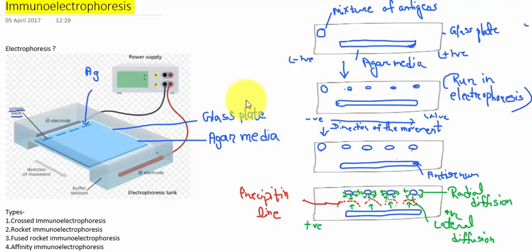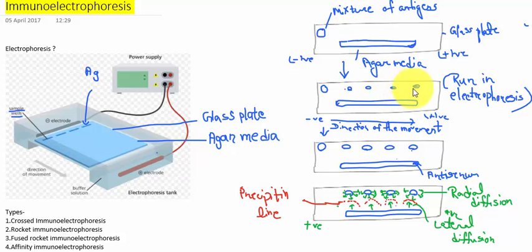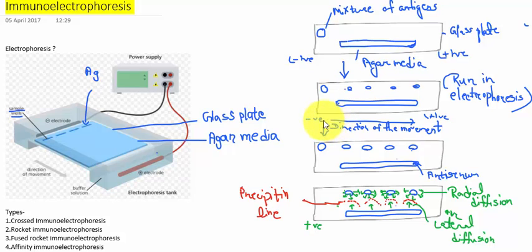Electrophoresis is the movement of the ions or the components, as we have just discussed. When the antigen mixture is subjected to electrophoresis, the sample gets separated and forms individual bands. You can see in this picture the sample of antigen is separated, and there is a longitudinal trough cut in the gel. The movement of the antigen components is from the negative electrode to the positive electrode. Then in the next step, you pour the antiserum or antibodies so that they can react with the particular antigen.